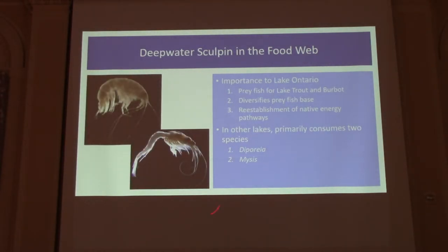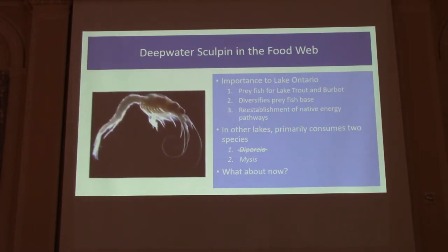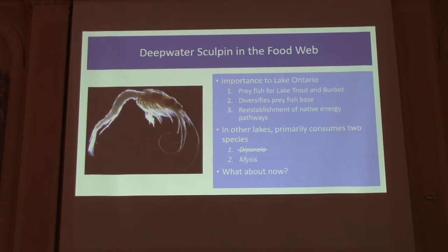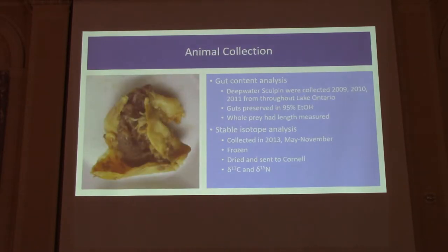Here's a diporeia and here's a mysis. The problem is that diporeia throughout the lakes have largely collapsed — why that has occurred we're not entirely sure. That means that mysis are now the energy pathway available to deepwater sculpin. So is that what we see in Lake Ontario? Are they entirely dependent on mysis? To address this problem, we looked at gut content and stable isotopes of deepwater sculpin, using materials collected from 2009 to 2011, with preserved guts. We looked at 13C and 15N isotopes in 2013.